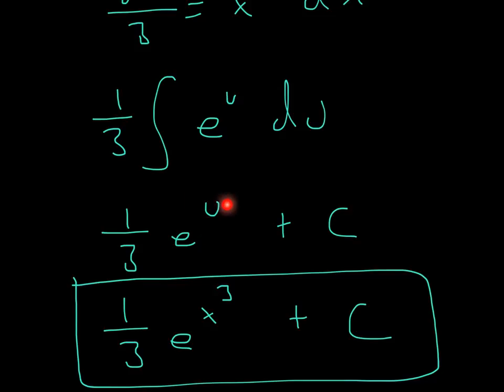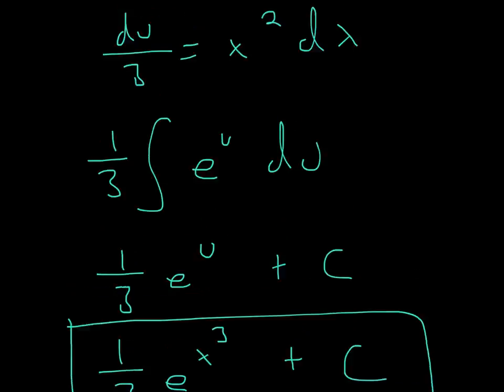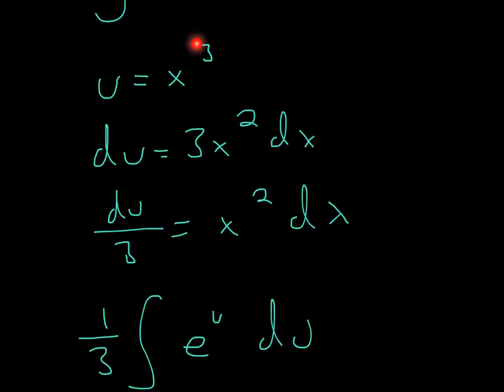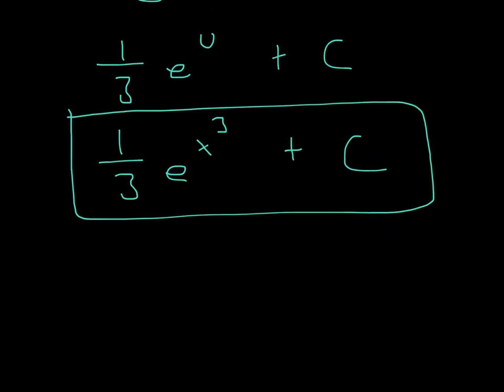Because since we did a substitution, we have to substitute back. So I said that u equals x cubed, so I'm going to plug that back in. So I'll get 1 third e to the x cubed plus C. And that's the final answer. So I hope that helped, and thanks for watching.